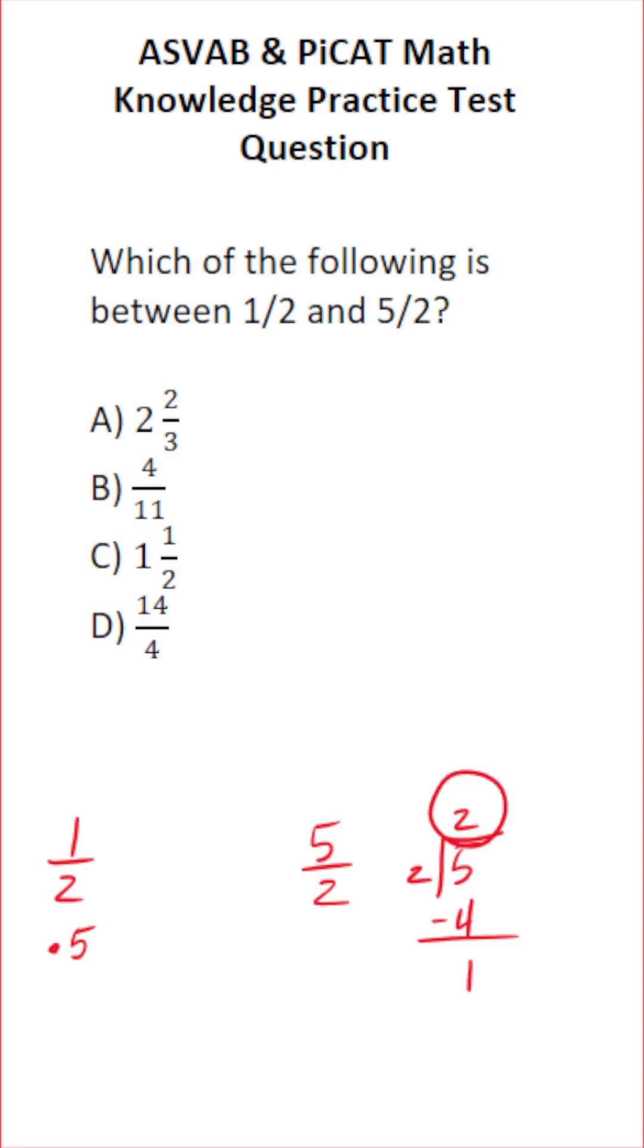So our mixed number is gonna be 2 as our whole number. This remainder of 1 is gonna be our numerator, and this 2 is gonna be our denominator. So 5 over 2, in other words, is the same thing as 2½.